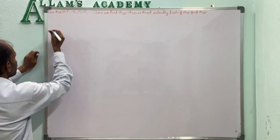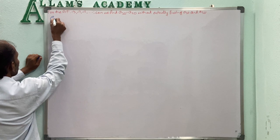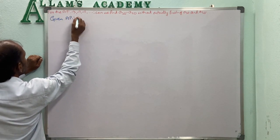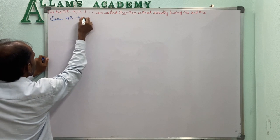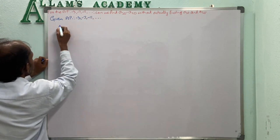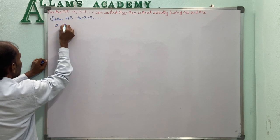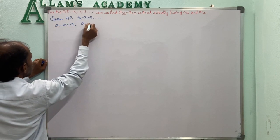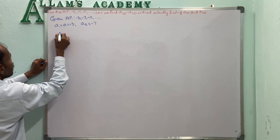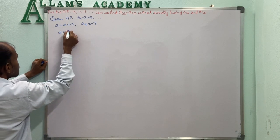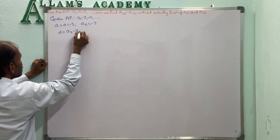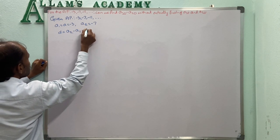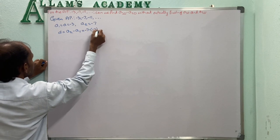For the given AP: -3, -7, -11, and so on, the first term A equals -3 and the second term A2 equals -7. We find the common difference D equal to A2 minus A1, that is -7 minus (-3).